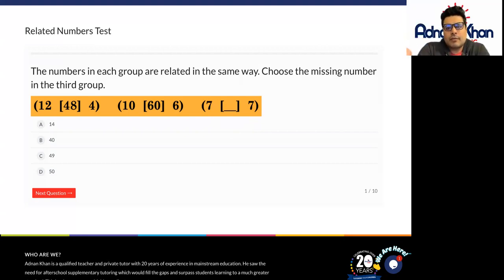So if we did 4 times 12 that will give us 48. If we did 6 times 10 that will give us 60. And if we did 7 times 7 that will give us an answer of 49.